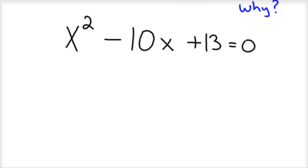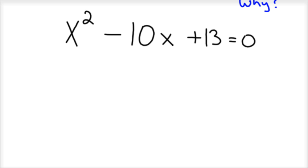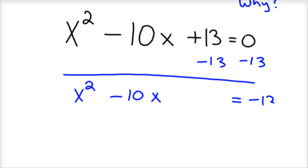So to complete the square, it's kind of like a cookbook-y process, like making soup or something. But what you do is you would first subtract the 13. So we're going to solve for x, essentially. So you subtract the 13 over here to the other side. And so we have x squared minus 10x equals negative 13.